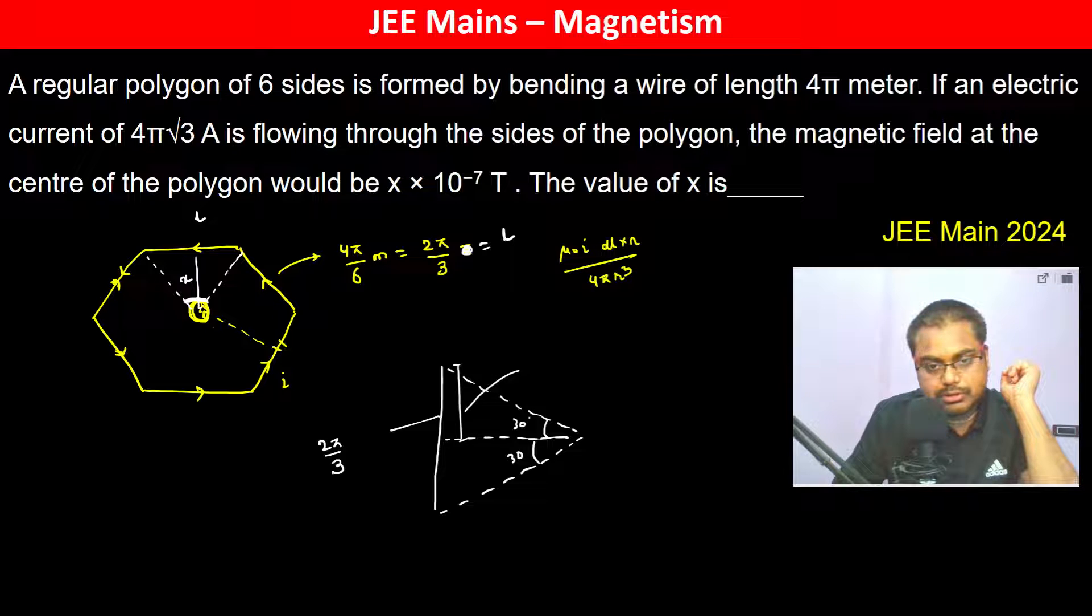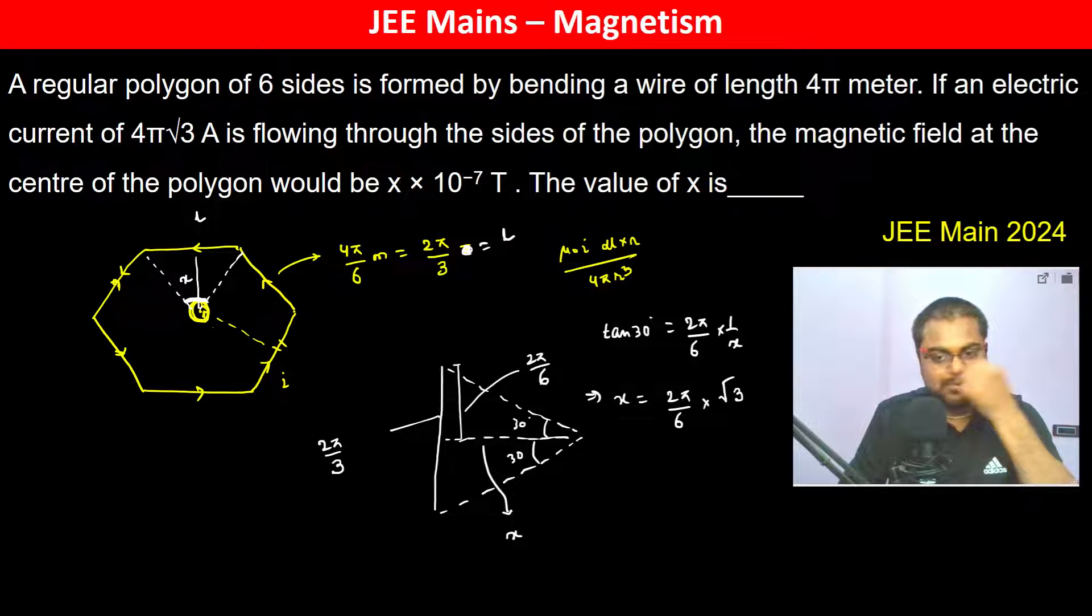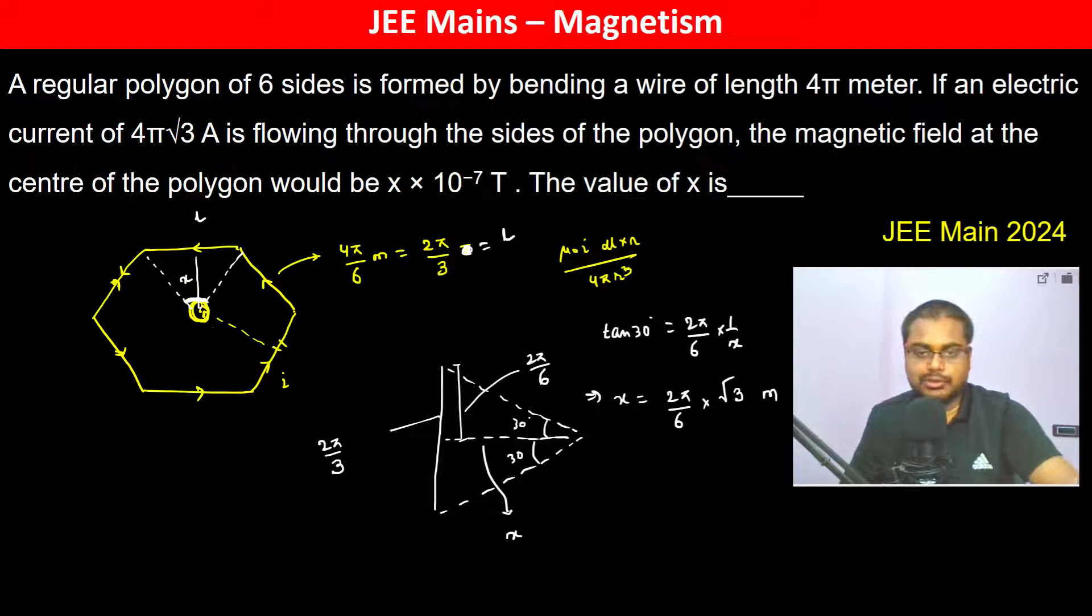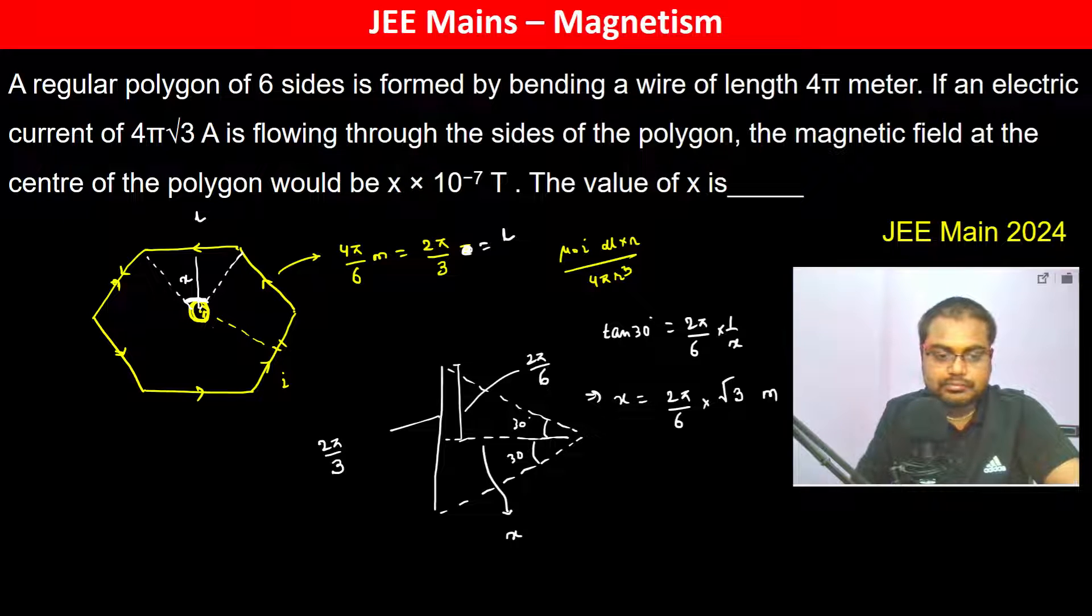tan 30° = (2π/6) × (1/x). Since tan 30° = 1/√3, x becomes 2π/(6√3) meters. Therefore, the magnetic field is going to be...